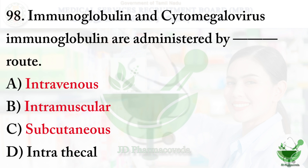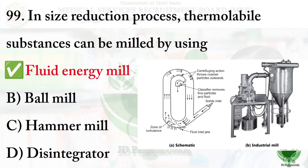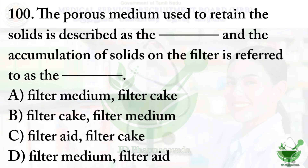Question number 99: in the size reduction process, thermolabile substances can be milled by using — option A — fluid energy mill, option B — ball mill, option C — hammer mill, option D — disintegrator. The right option is option A: fluid energy mill.